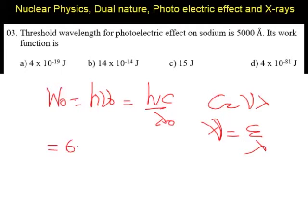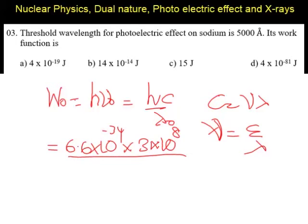H is 6.6 into 10 power minus 34. C is 3 into 10 power 8. And lambda naught is 5000 angstrom, so we can write it as 5 into 10 power minus 7 meters.